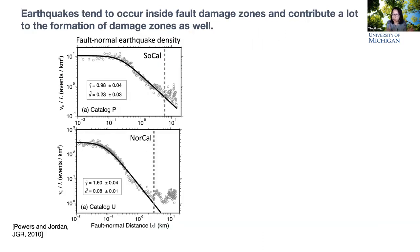Earthquakes tend to occur inside fault damage zones, as shown by figures of fault-normal earthquake density in Southern and Northern California. Plotting earthquake density as a function of fault-normal distance, after a certain distance the earthquake density decays rapidly, indicating a characteristic scale at which earthquakes concentrate. For Southern California, this half-width is about 100 meters, giving a total width of about 200 meters; in Northern California the fault damage zone structure appears narrower.